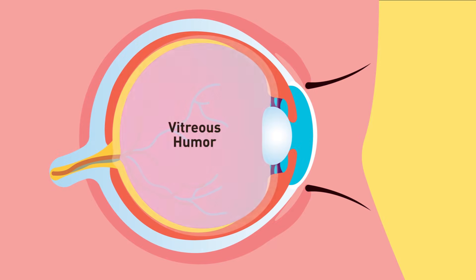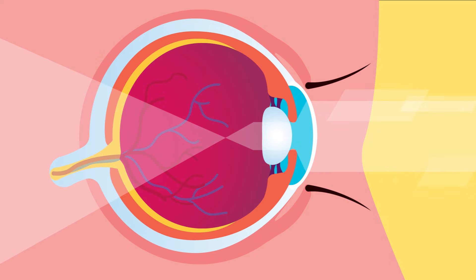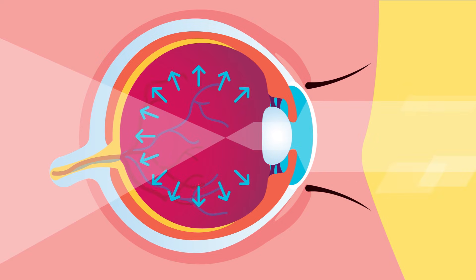Vitreous humor is a transparent, jelly-like substance at the rear of the eye. It refracts light and, together with aqueous humor, maintains the shape of the eyeball.